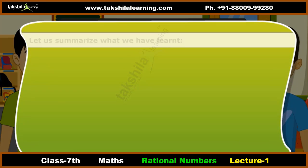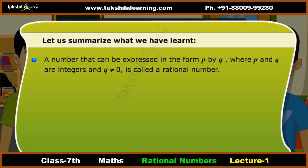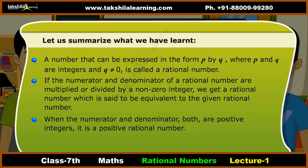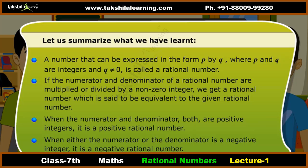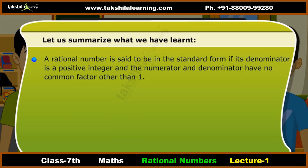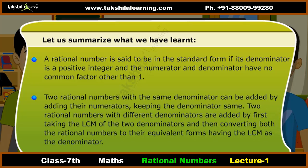Summary: A number that can be expressed in the form P by Q, where P and Q are integers and Q is not equal to 0, is called a rational number. If the numerator and denominator are multiplied or divided by a non-zero integer, we get an equivalent rational number. When both numerator and denominator are positive integers, it is a positive rational number; when either is negative, it is a negative rational number. A rational number is in standard form when the denominator is positive and the numerator and denominator have no common factor other than 1. Two rational numbers with the same denominator are added by adding their numerators.